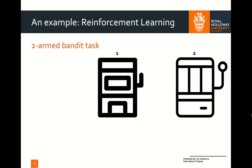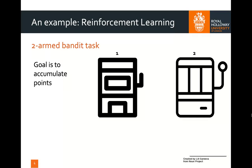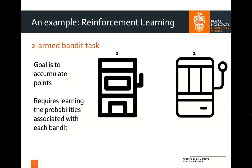What you see here is two slot machines, which are otherwise known as bandits. The aim of the game is to try and collect as many points as possible. Each time I select one of the slot machines, I have a certain probability of getting a point, and each one will only give me one point at a time. My goal is to collect as many points as possible over the task, which requires me to learn the probabilities associated with each of these bandits or slot machines. For the purposes of this example, I'm going to have two bandits and 100 trials to learn which one gives me the most points overall.